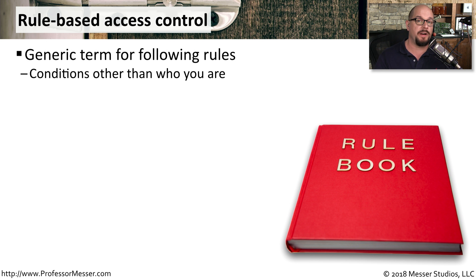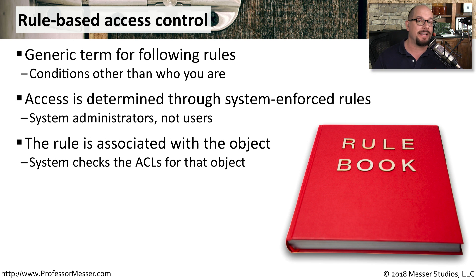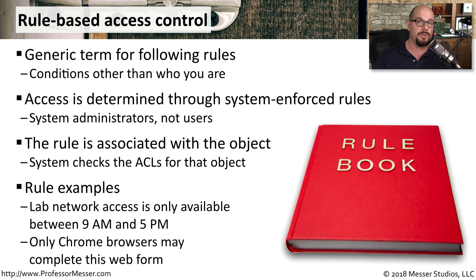Rule-based access control is a very broad term that describes how a set of rules will be followed to determine what type of access someone will gain. A set of rules are created by a system administrator, and then those rules are examined to determine exactly what type of access a user might have. We often see rule-based access control used in firewalls — you may set up rules that allow what type of access someone has to a particular network during a particular time of day, or rules specifying that only Chrome-based browsers may access or fill out a particular web form.